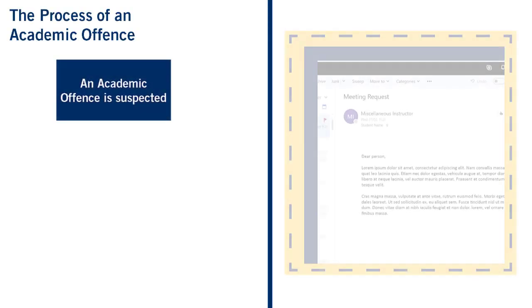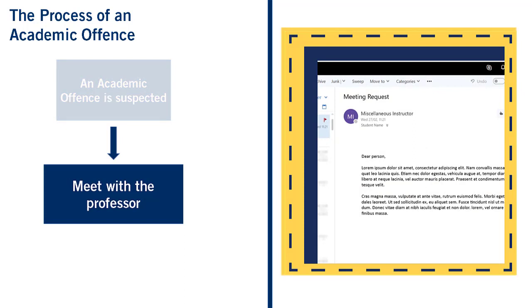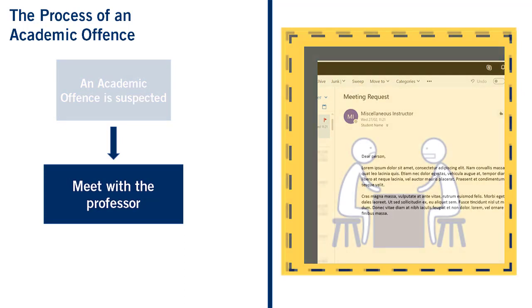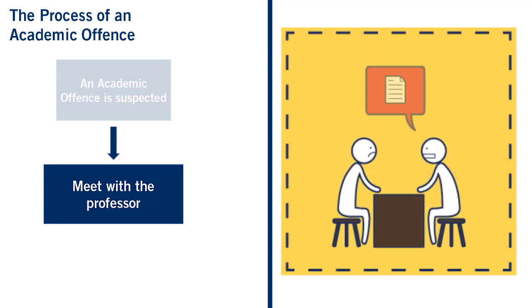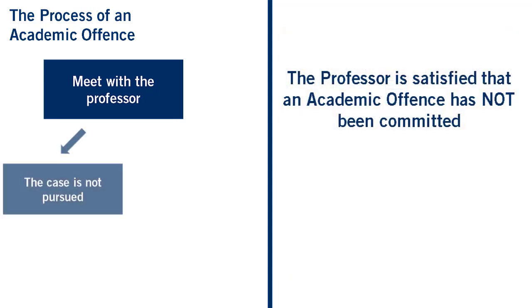If you've been suspected of an academic offense, you'll receive an email from your professor to discuss the allegations. The professor will show you the work or state the situation, and explain why an academic offense may have been committed. You can explain what happened to the professor — be honest about your situation. If the professor is satisfied that an offense was not committed, they can choose not to pursue the matter.